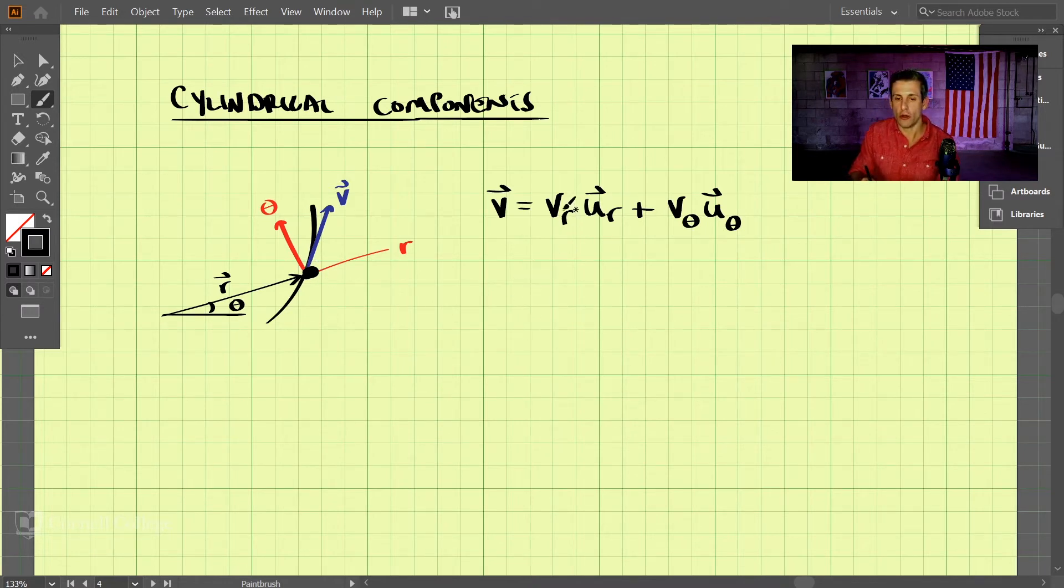So the velocity in the radial direction is nothing more than the change in the radius with respect to time. As it grows longer or shorter, we're just looking for the change in that radius over time.